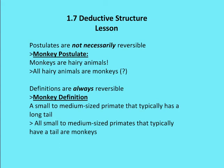But we know that that's not true. Tigers are hairy, some humans are hairy — so just because you have a hairy animal, it doesn't necessarily mean it's a monkey. So postulates are unproven assumptions that appear true; however, they're not necessarily reversible. They could be reversible.